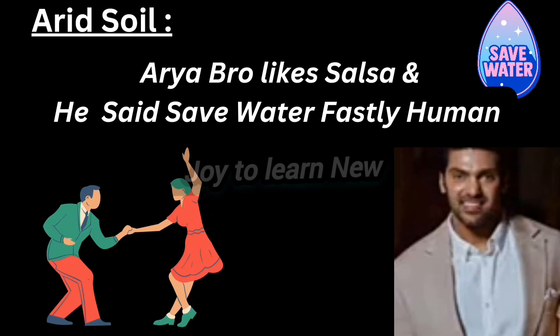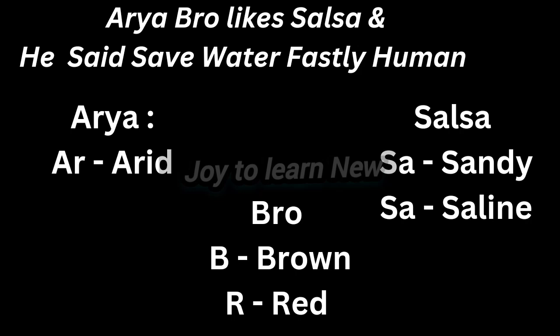When you study the shortcuts, no need to worry about grammatical errors — just remember the sentence as it is. Now let's see what it means. In 'Arya': AR stands for arid soil, BR stands for brown, and R refers to red. That is, arid soil ranges from brown to red in color.